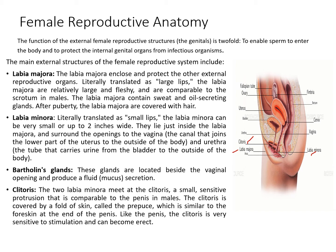The labia majora enclose and protect the other external reproductive organs. This is the outer part of the female reproductive anatomy, also called the large lips. The labia majora are relatively large and fleshy and are comparable to the scrotum in males. The labia majora contain sweat and oil secreting glands. After puberty, the labia majora are covered with hair.